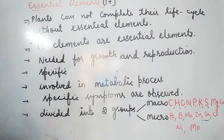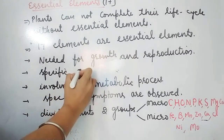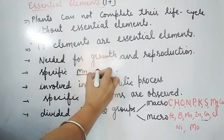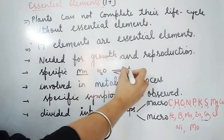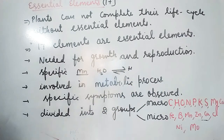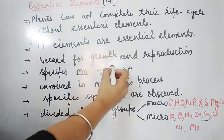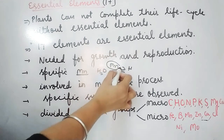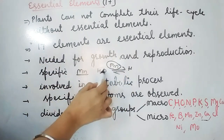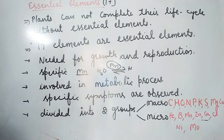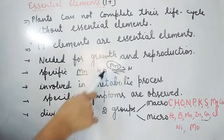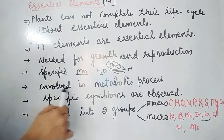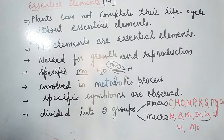These essential elements are specific in nature. For example, Manganese plays an important role during photosynthesis — specifically in the splitting of water (photolysis). Each element has a specific role in metabolic processes. These essential elements are required in micro amounts and are involved in metabolic processes.